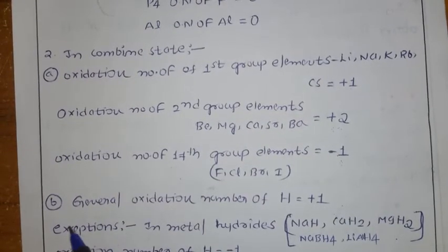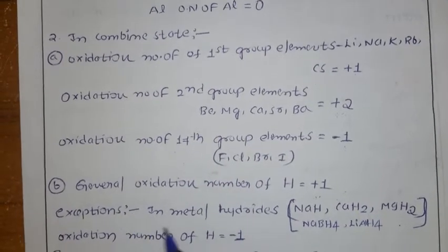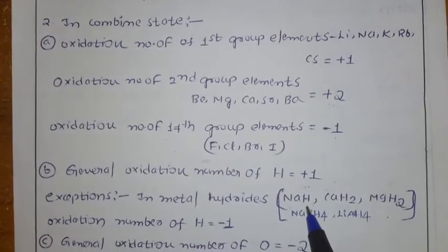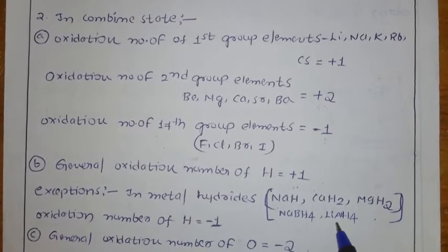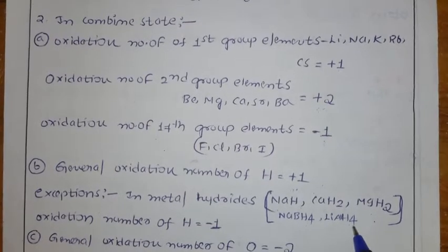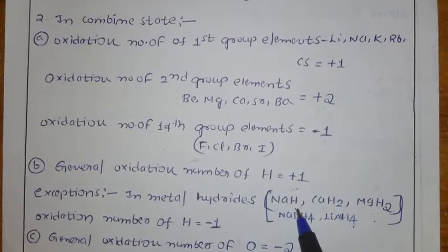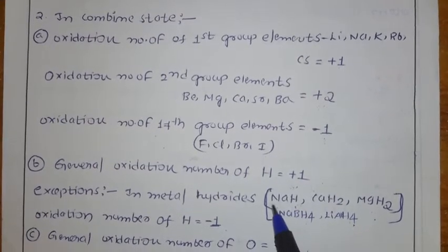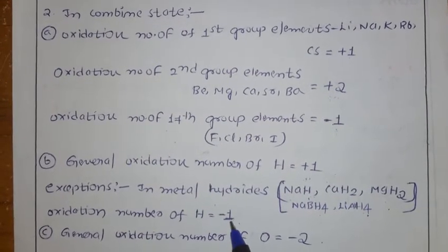In combined state, the general oxidation number of hydrogen is plus 1. But in metal hydrides — like sodium hydride, calcium hydride, magnesium hydride, NaBH4 (sodium borohydride), and LiAlH4 (lithium aluminium hydride) — the hydrogen oxidation number is minus 1. This is because oxidation number depends on electronegativity: metal has less electronegativity, hydrogen has more, so hydrogen pulls electrons, getting a negative charge. So in metal hydrides, the oxidation number of hydrogen is minus 1.